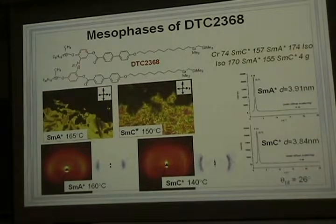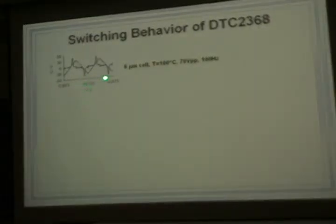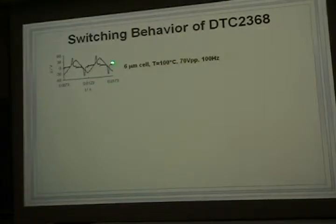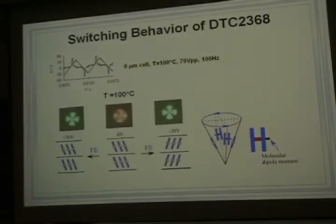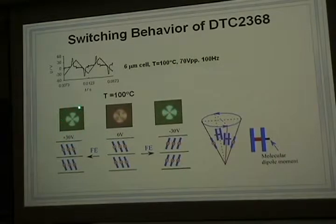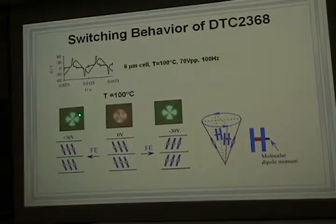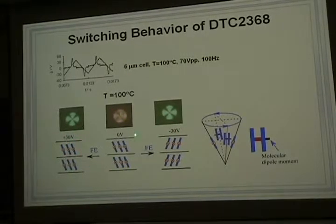The switching current response shows only one single peak. One single peak suggests ferroelectric switching. We observed circuit domains with a tilt brush inclined to the cross-polarizers. This is zero degrees mode, minus 30 degrees mode, and plus 30 degrees mode. This suggests bistable switching for this material.